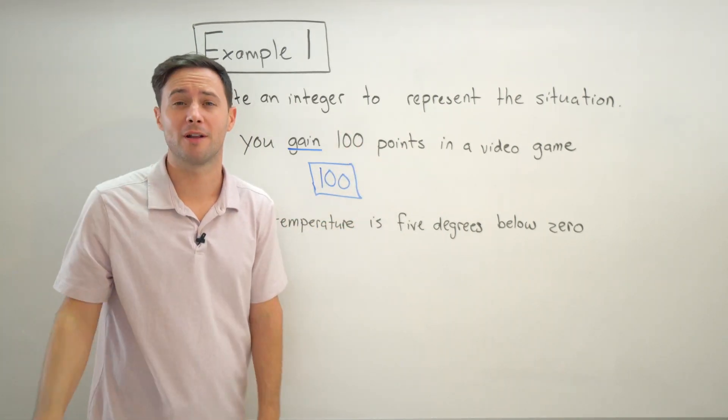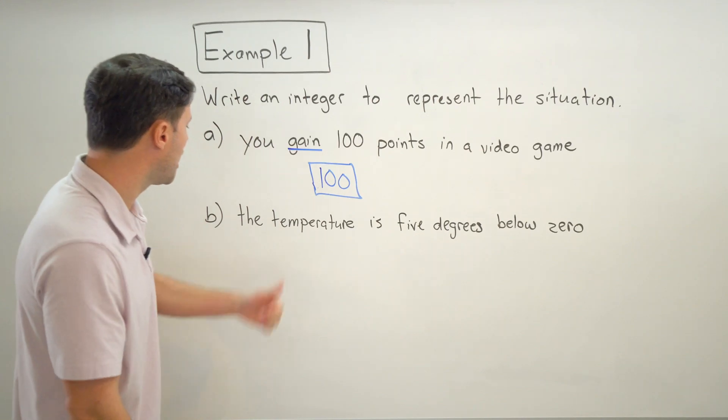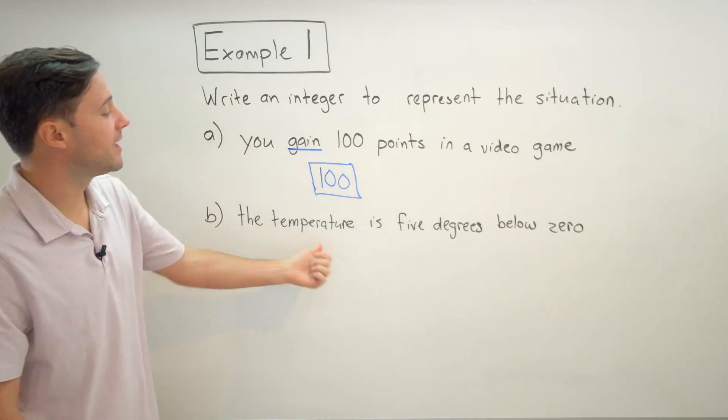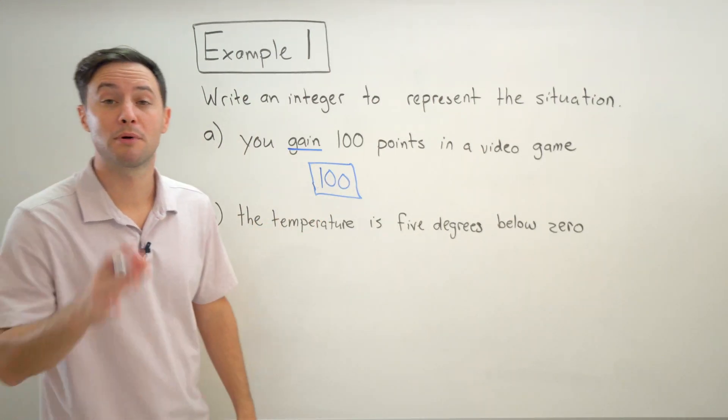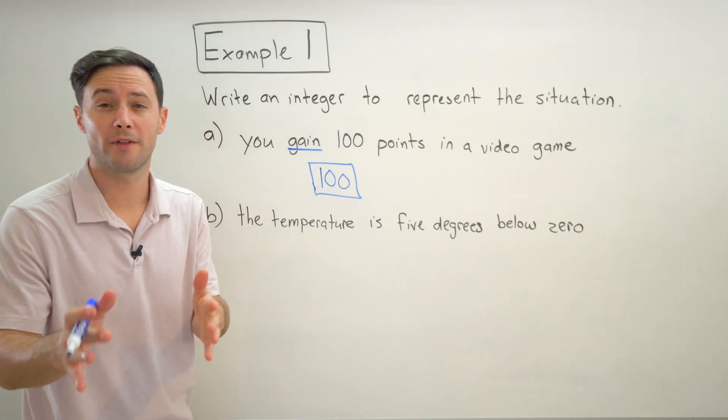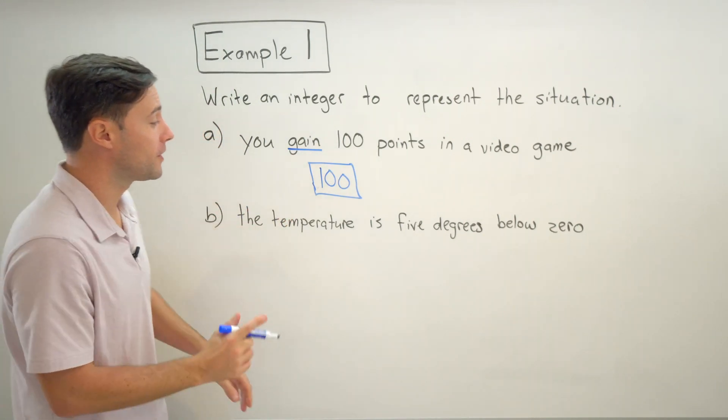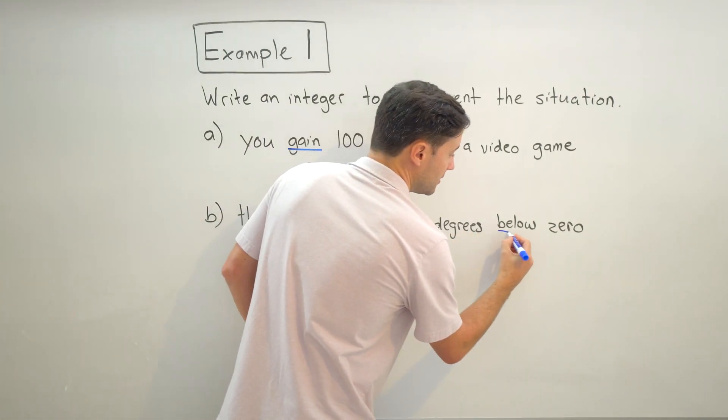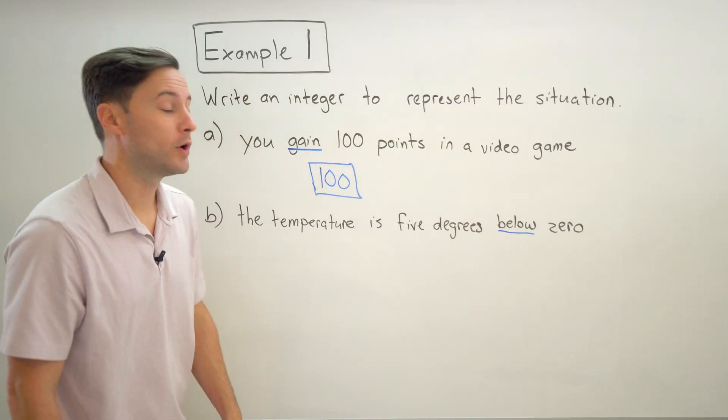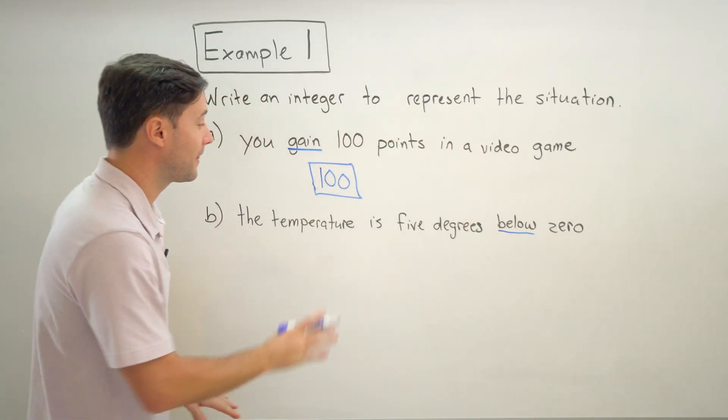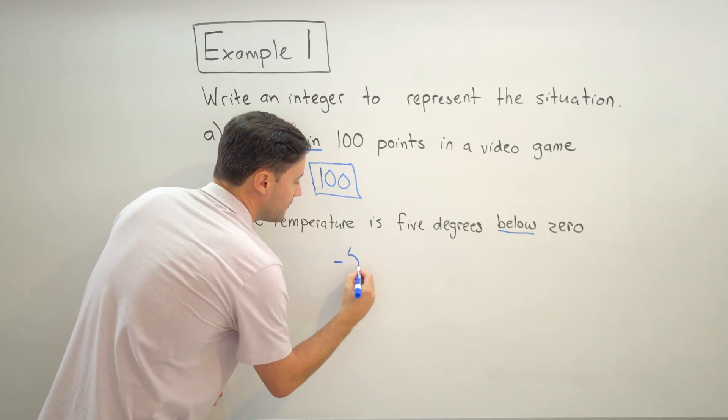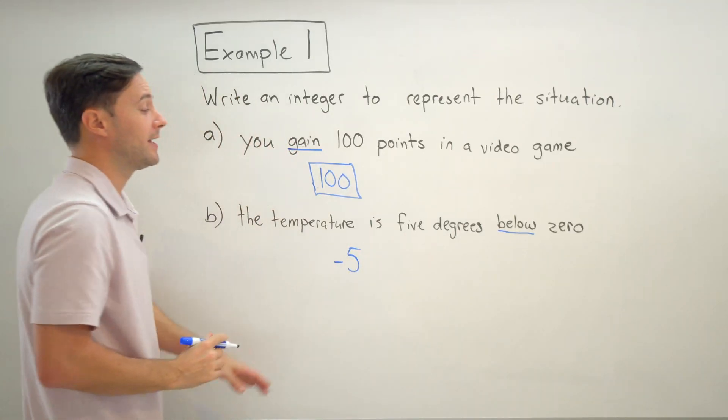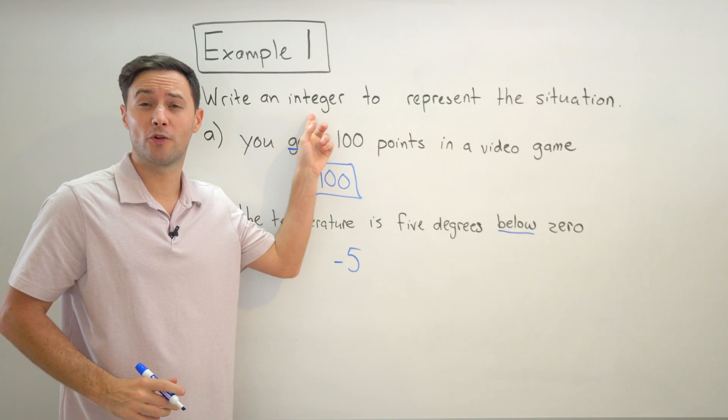For part b, it says the temperature is five degrees below zero. So again we're looking for that keyword and hopefully below stands out to you. So if it's below zero, that would be an integer of negative five.